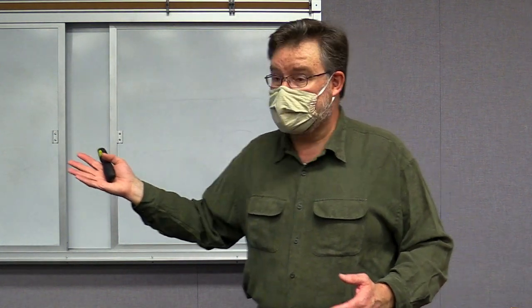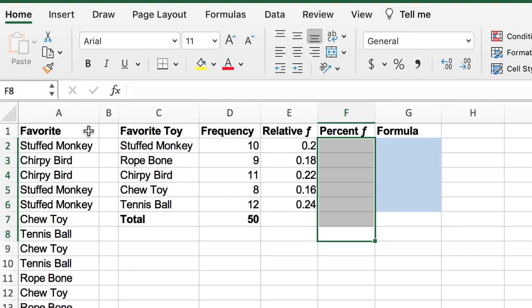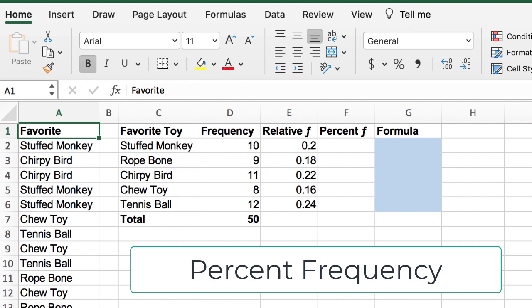So now I have added the relative frequency to my table. And we can see those numbers appearing in the second column. But we have one remaining column, still blank. That is the percent frequency. And that is actually very closely related to relative frequency. Let me show you how.